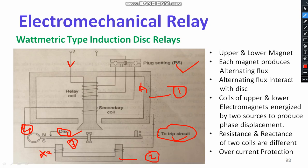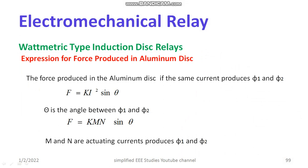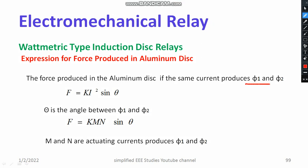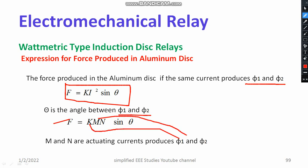I have written the details in brief — kindly note them in your notebook. The total amount of force generated at the aluminium disc due to the interaction of flux phi-1 and phi-2 is given by k·i²·sin(θ), where θ is the phase angle between flux 1 and flux 2. Alternatively, you can write the total force as k·m·n·sin(θ), where m and n are the actuating currents produced by phi-1 and phi-2.